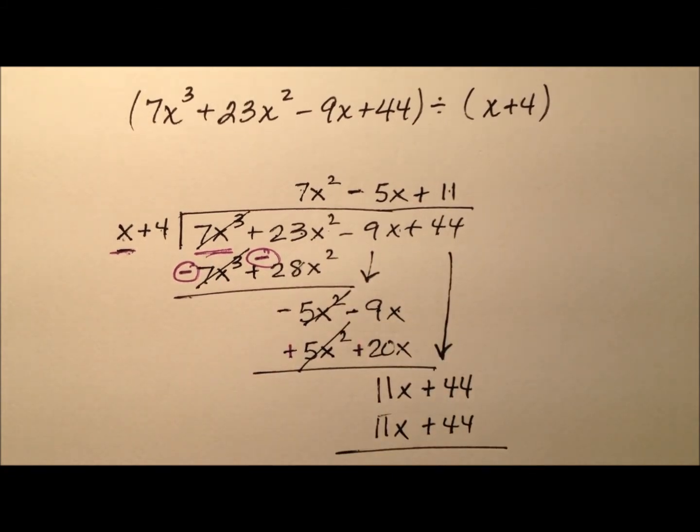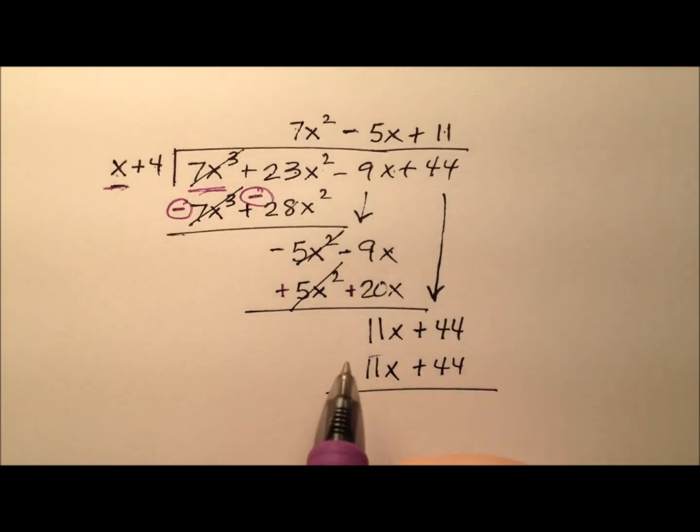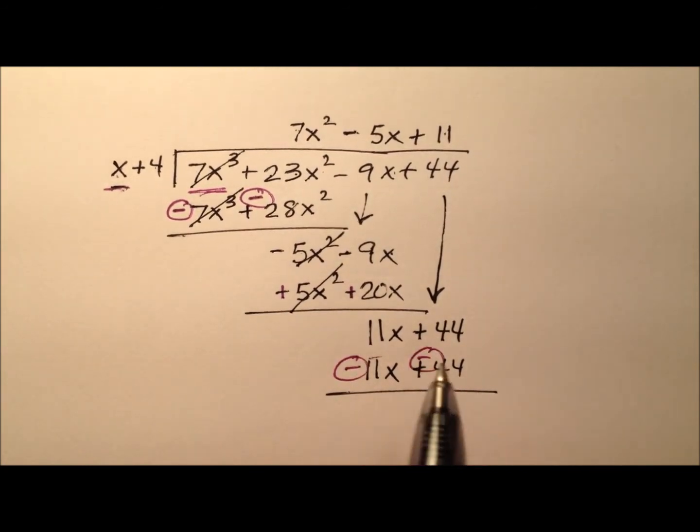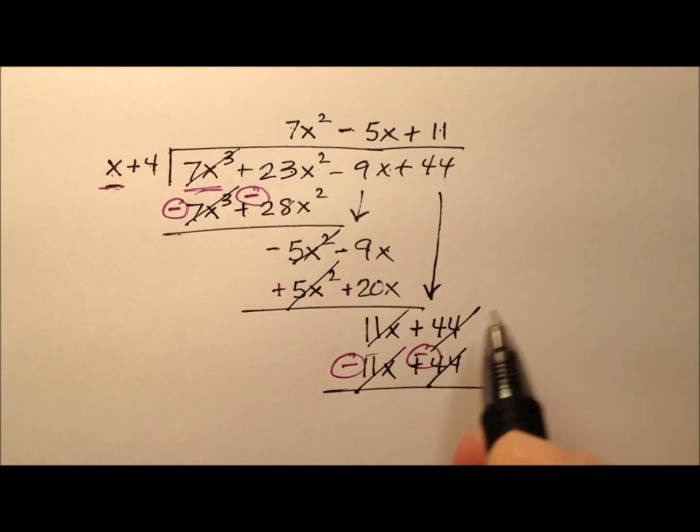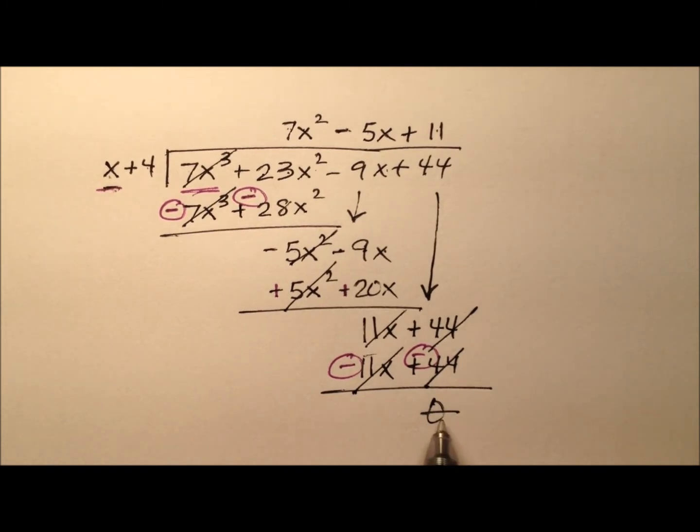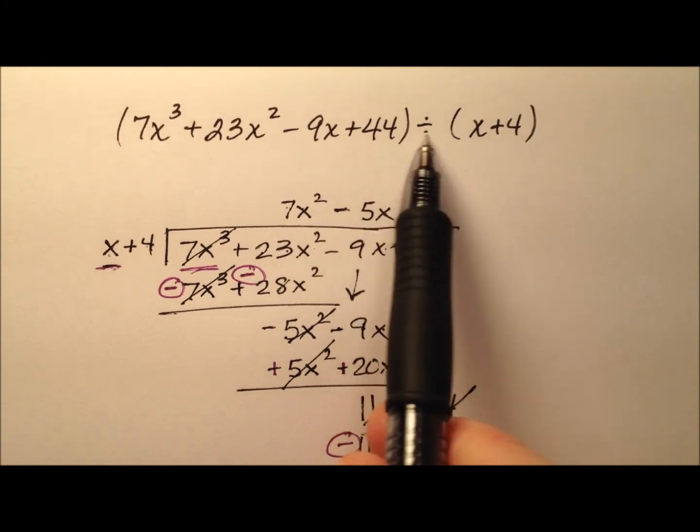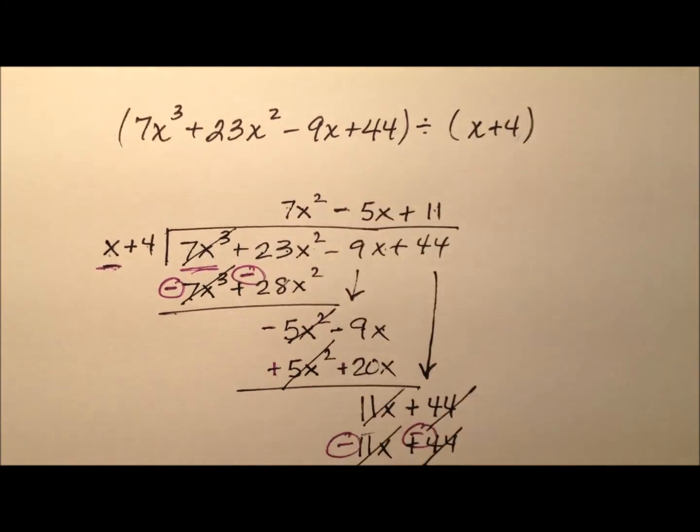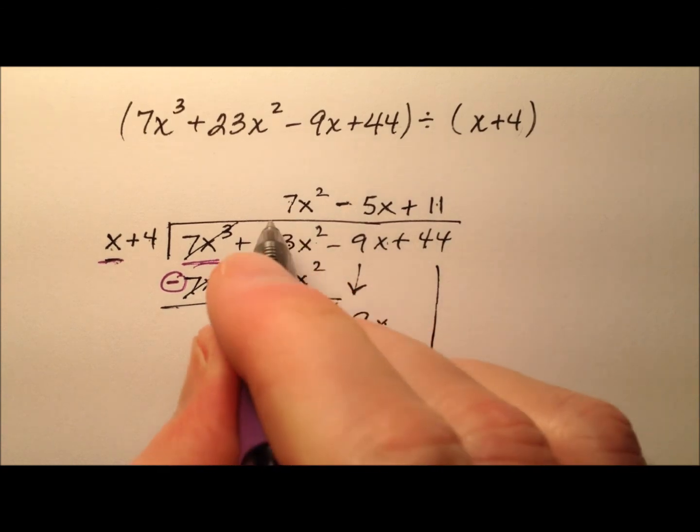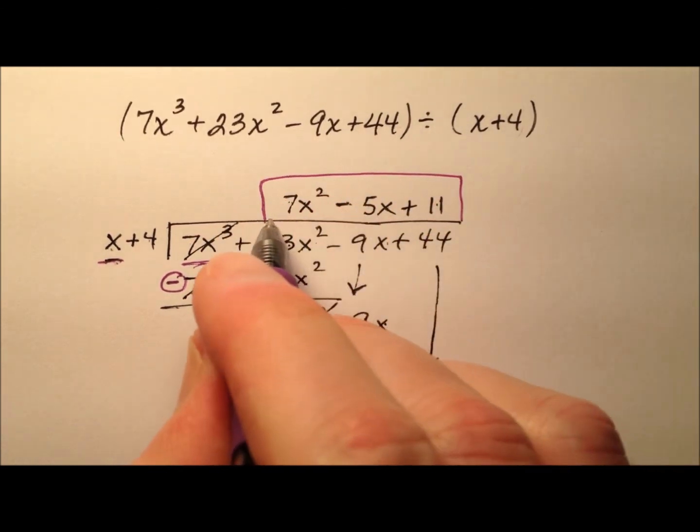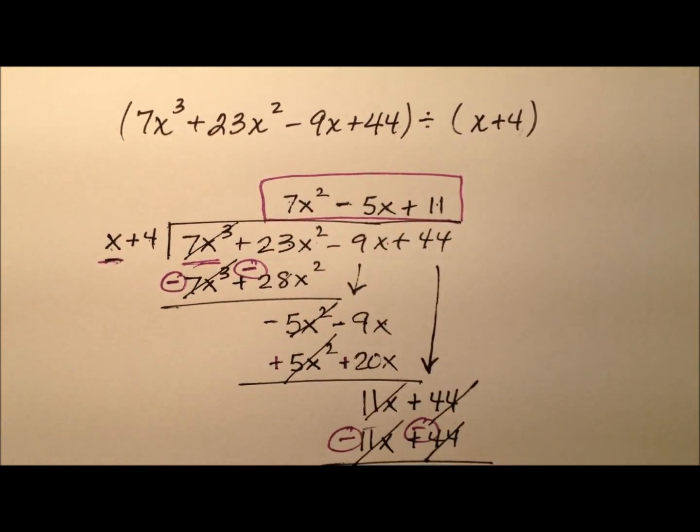And finally I need to subtract here. So I'm going to change the sign and then add. And what I notice is those cancel and those cancel, leaving me with nothing down there, which means there is no remainder. So this binomial divides this polynomial evenly without remainder. And the answer then that I get is 7x squared minus 5x plus 11.